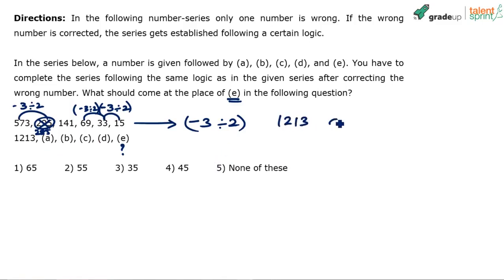So we have 1213, A, B, C, D, E. I am doing the calculation mentally to save time. 1213 minus 3 is 1210. 1210 by 2 is 605. So this is 605.